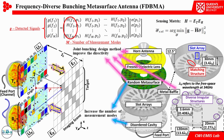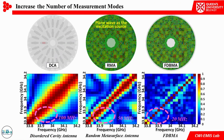We propose a novel joint bunching method to enhance the SNR level by increasing the directivity of spatially random radiation patterns. As shown in the figure, both the disorder cavity and random metasurface can generate frequency-diverse patterns, with frequency intervals of 100 MHz and 50 MHz respectively. Combining these reduces the interval to 20 MHz.